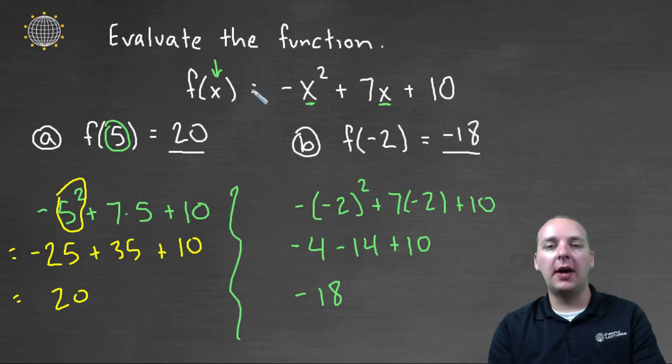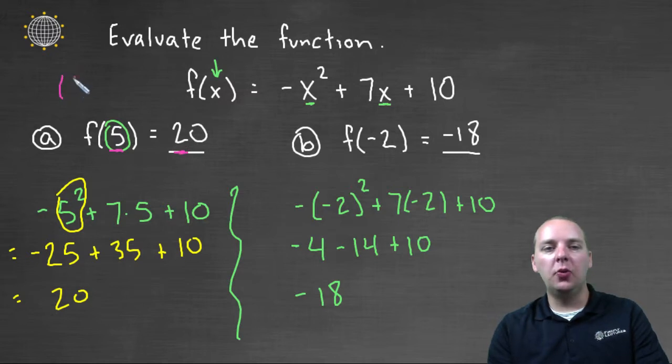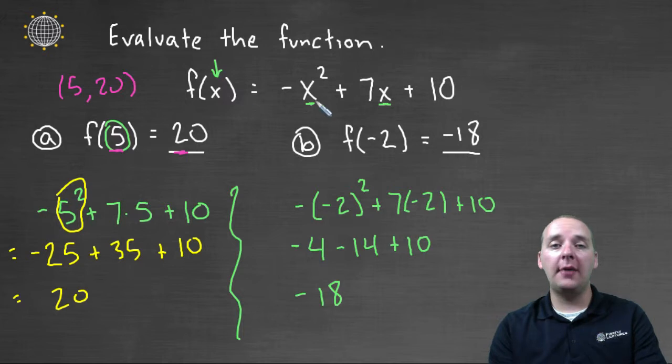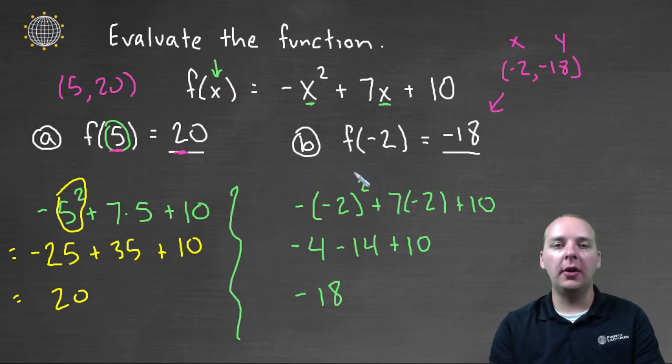So we've evaluated this function at these two values. And just to be clear what these answers are meaning, this five twenty, that's an ordered pair, x comma y, that would be on the graph of this quadratic function. And then same thing with this guy. When x is negative two, and the y is negative eighteen, this is an x, y value ordered pair that's on the graph of this parabola also. So these are a couple points on this guy's graph.